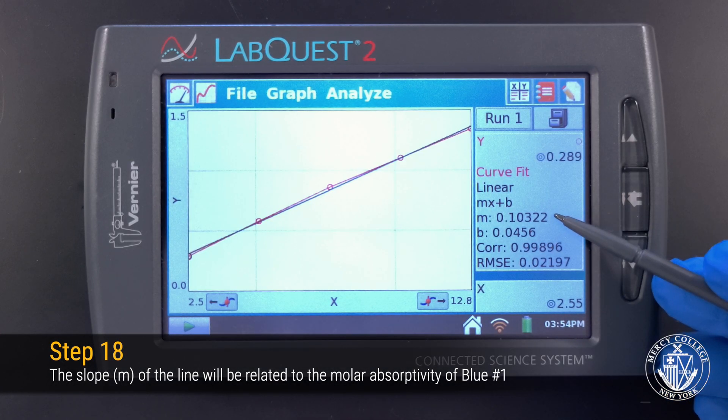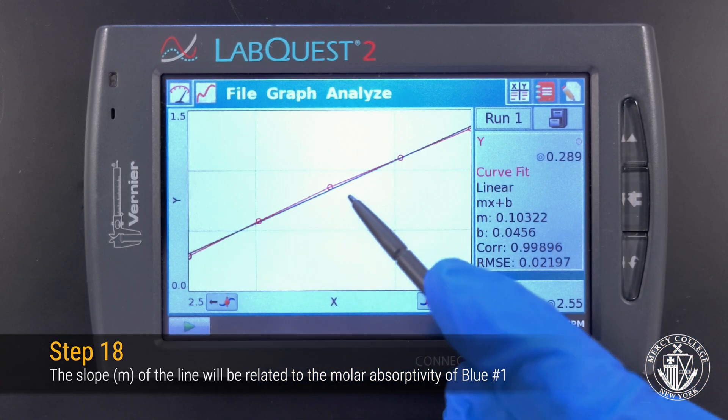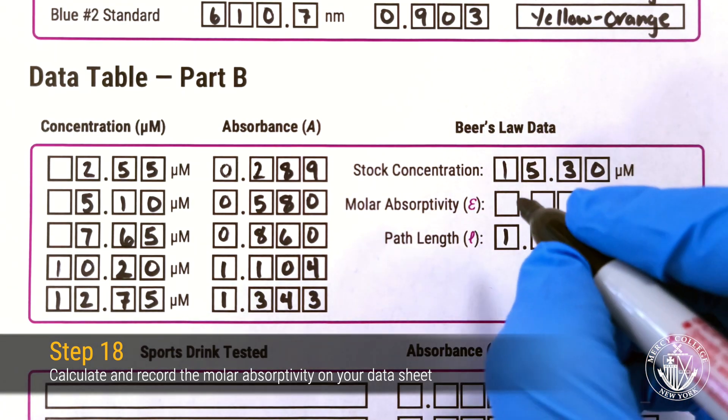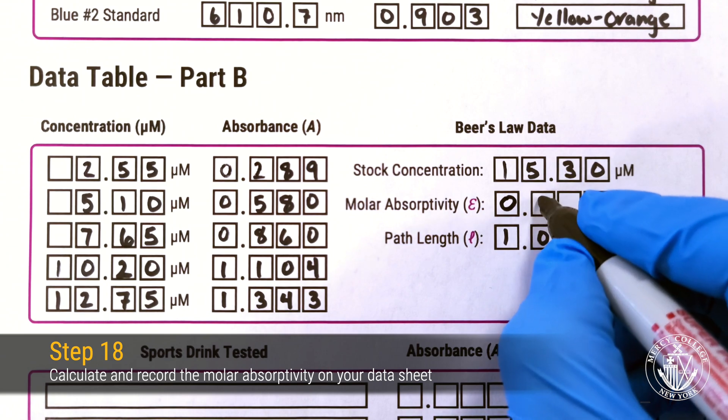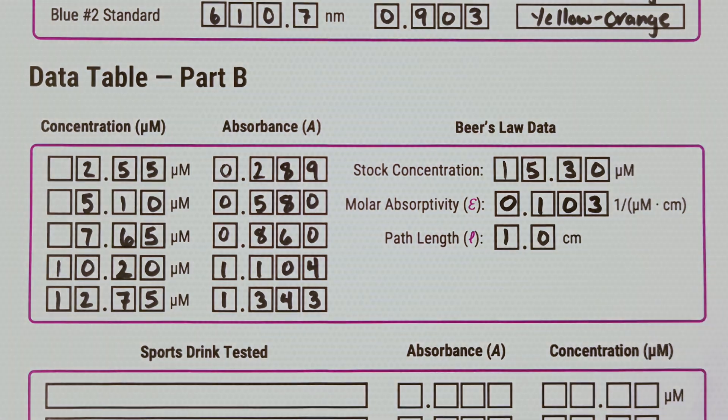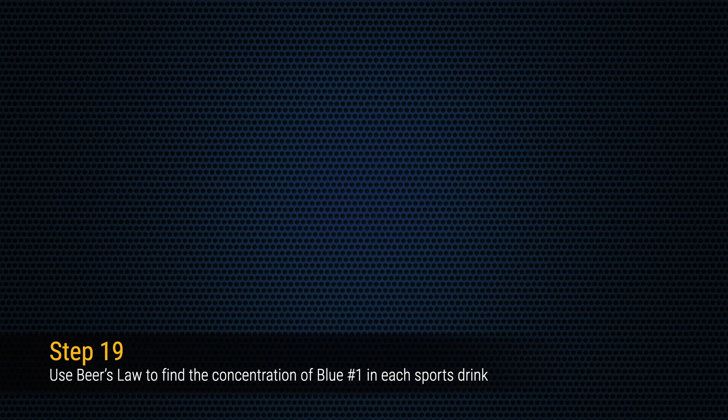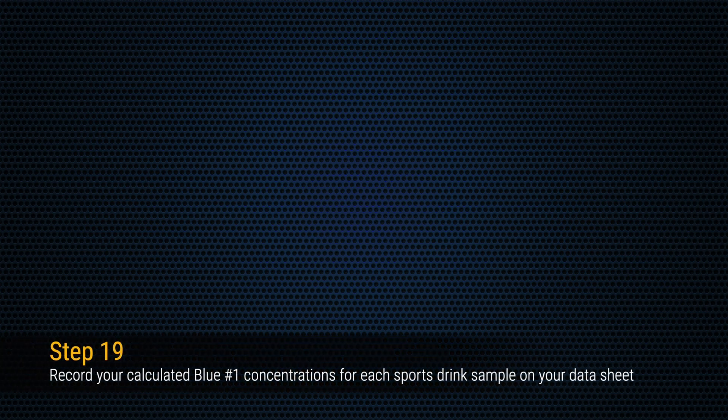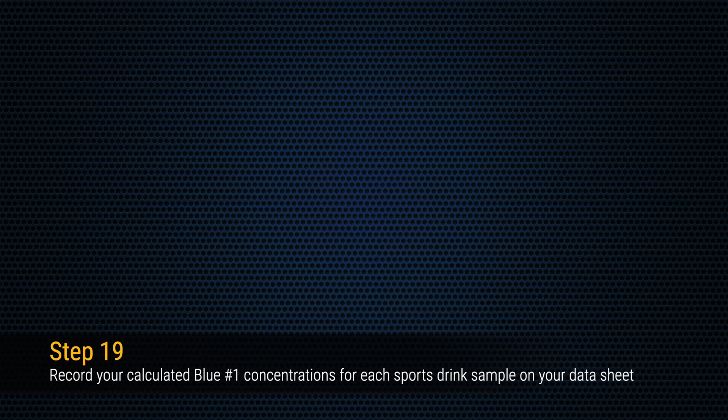Use Beer's Law and your value for the slope to compute the molar absorptivity for blue 1 dye. Record your molar absorptivity on your data sheet, and use your value for the molar absorptivity, along with Beer's Law, to calculate the concentration of blue 1 dye in each of your drink samples. Be sure to record the concentration of blue 1 dye in each of your drink samples on your data sheet.